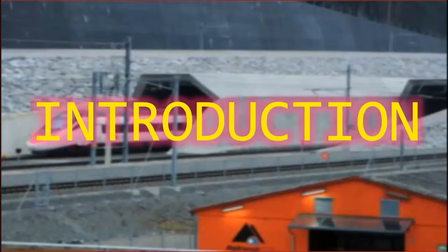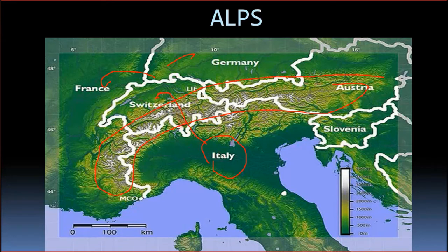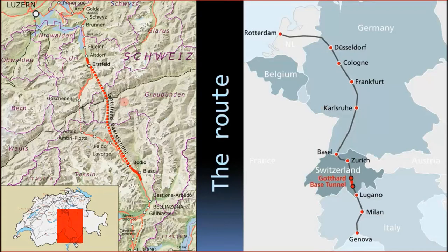Gotthard Base Tunnel, Switzerland — Introduction. Why was the tunnel built? For example, if you are in Italy and you want to go to France or further north, in between you have these high, lofty mountains — the Alps. To go from one side to the other, you need to either cross the Alps using high roads or build a new tunnel. That was the need for it.